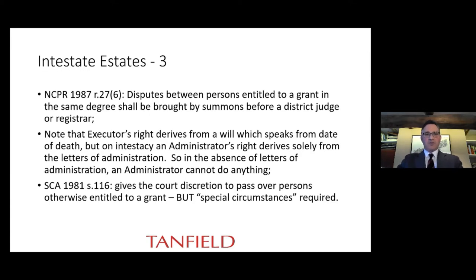The question often arises of what happens if two people are entitled to a grant at the same level — for example two children of the deceased, two parents who are divorced, or even two spouses in a polygamous marriage. This situation is dealt with in the Non-Contentious Probate Rules, Rule 27(6), which provides that disputes between persons entitled to a grant in the same degree shall be brought by summons before a district judge or registrar, who will make a decision about who will be entitled to take a grant.